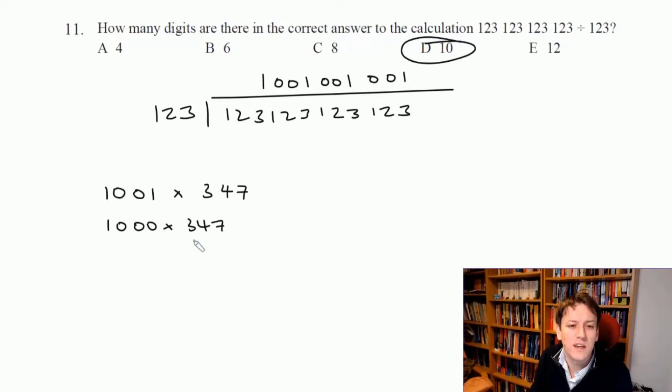If I do 1001 times a number like 347, that's the same as 1000 times 347 plus 1 times 347. That's 347,000 plus 347.